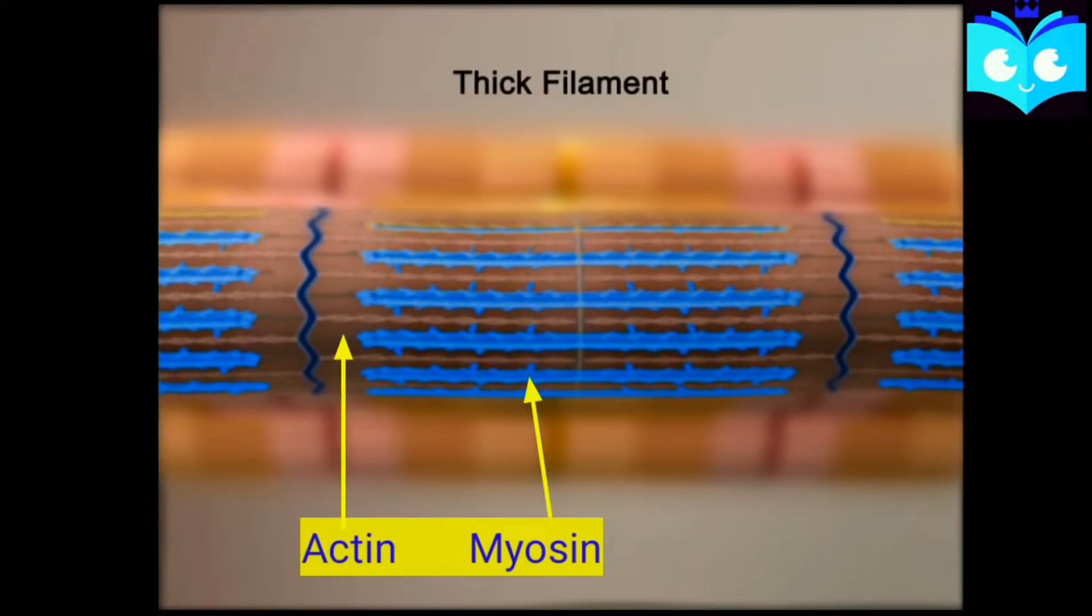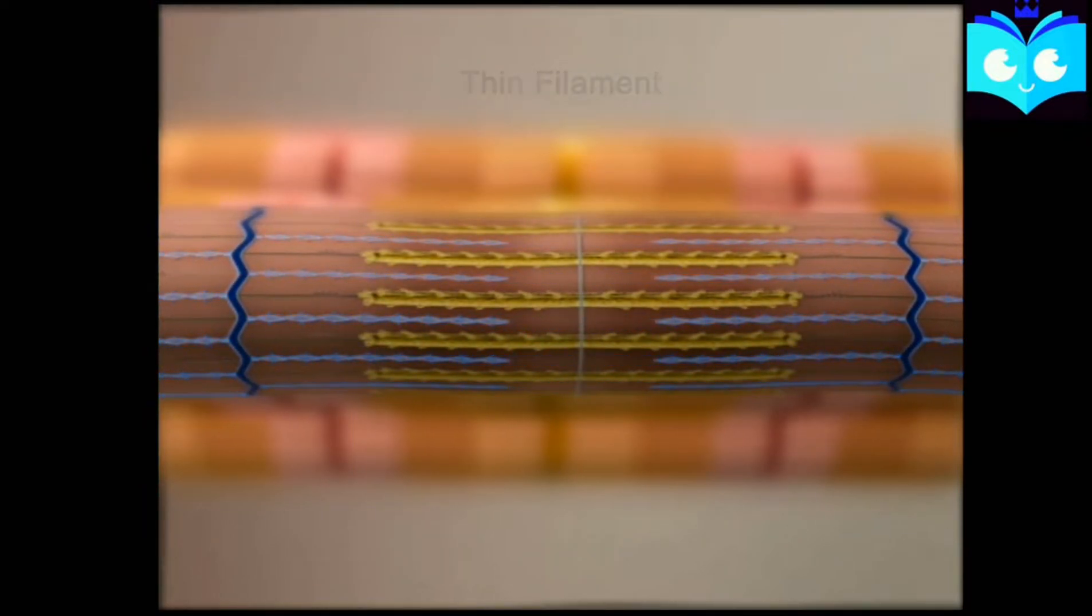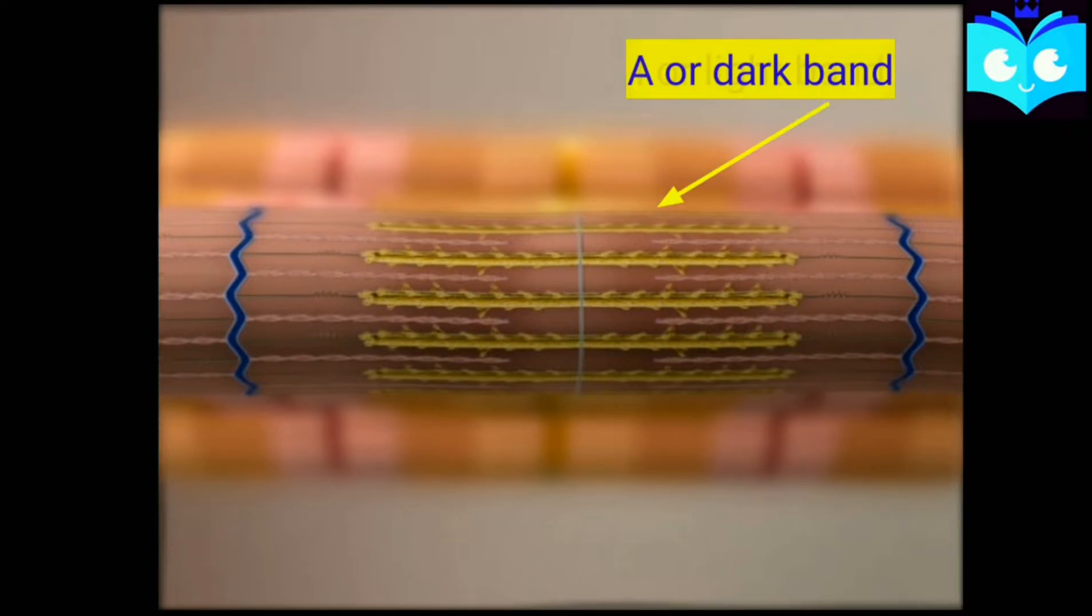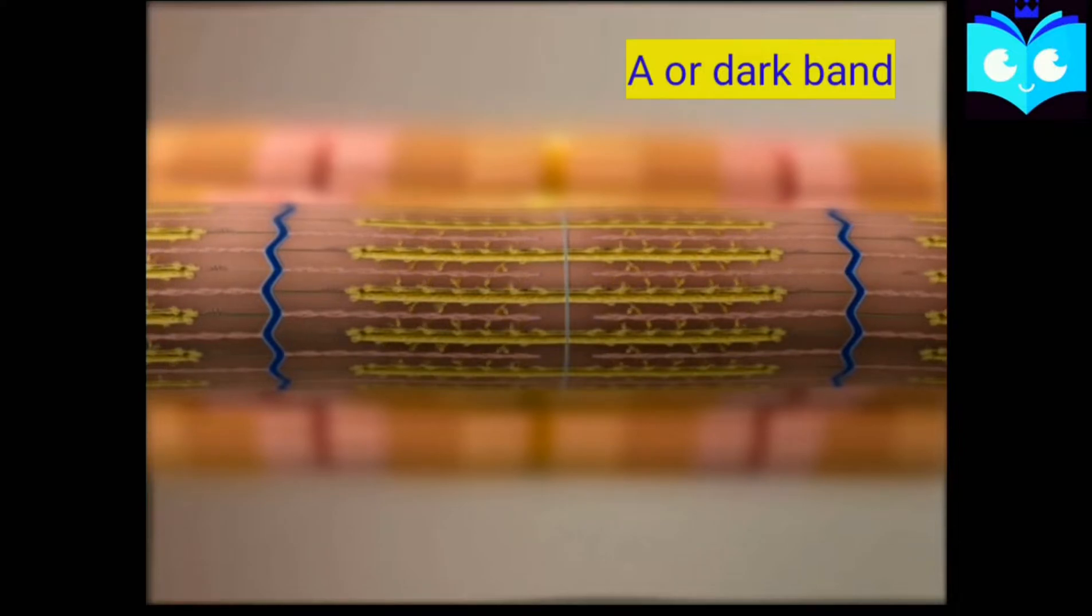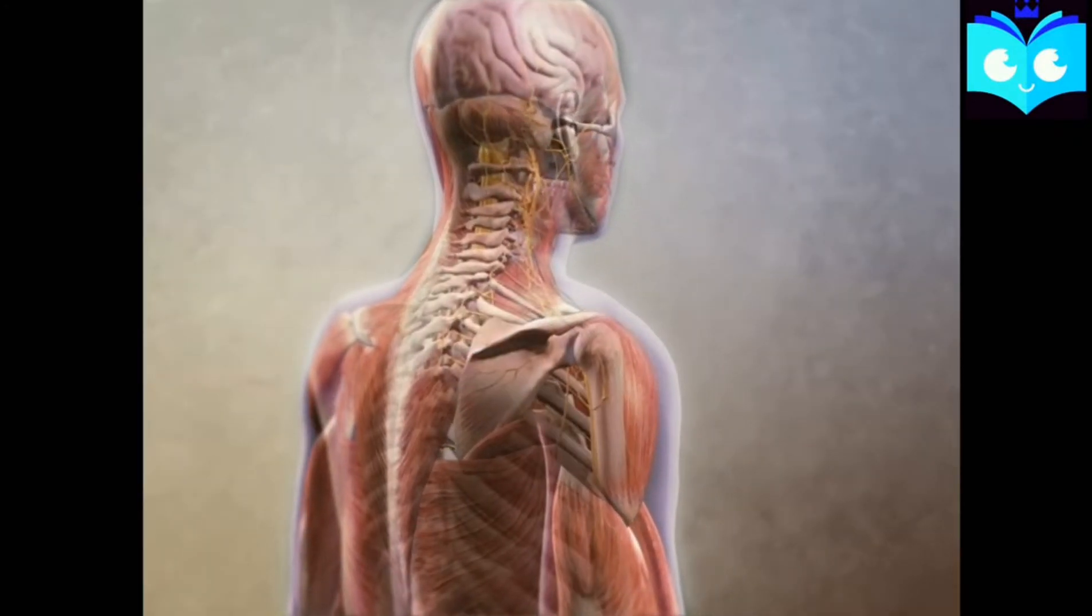If we talk about the structure of a sarcomere, it consists of actin and myosin filaments whose arrangement forms different bands like I or light band and A or dark band. Now let's move towards the actual process of muscle contraction.